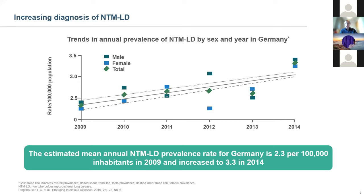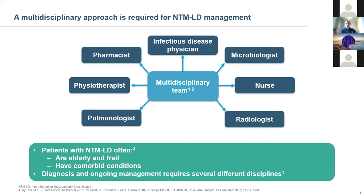Why is NTM increasing? We're likely addressing historical under-diagnosis. Patients with severe lung disease are living longer and are therefore more susceptible. We're also using more immunosuppressive therapies for autoimmune rheumatoid conditions, COPD, asthma, and others. So there's a whole range of reasons why NTM lung disease might be increasing.